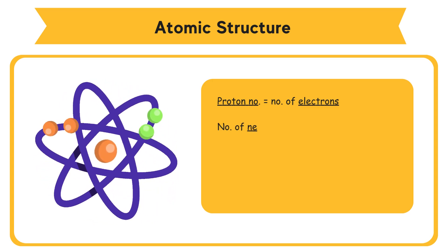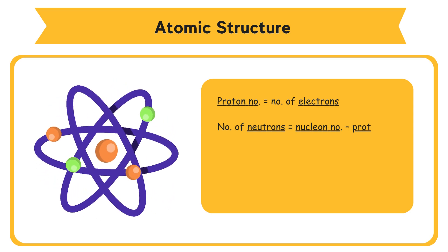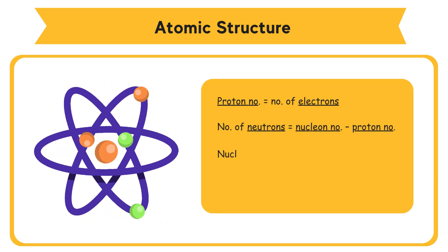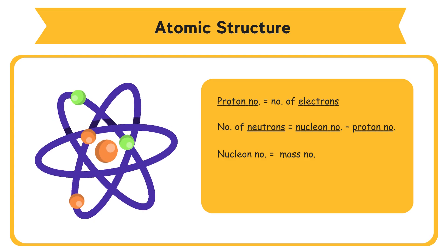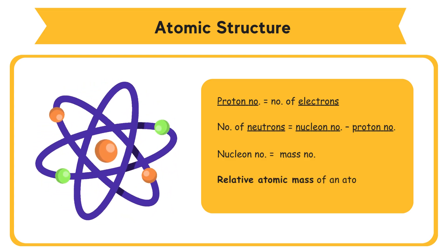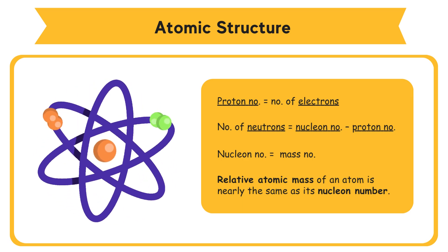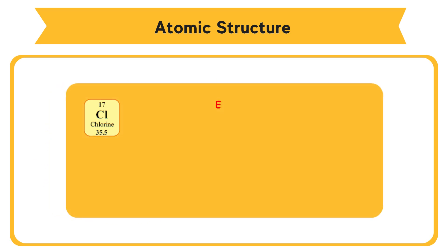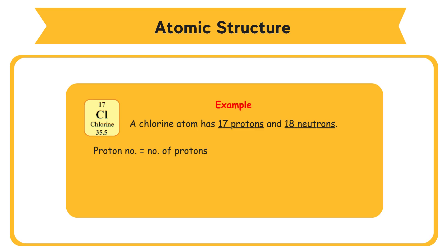The number of neutrons equals the nucleon number minus the proton number. The nucleon number is also known as the mass number. The relative atomic mass of an atom is nearly the same as its nucleon number. For example, a chlorine atom has 17 protons and 18 neutrons: proton number = 17, nucleon number = 17 + 18 = 35.